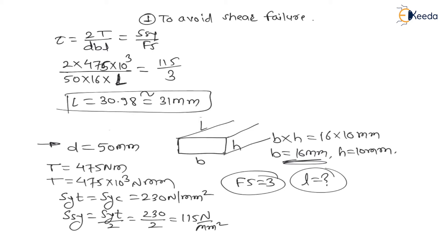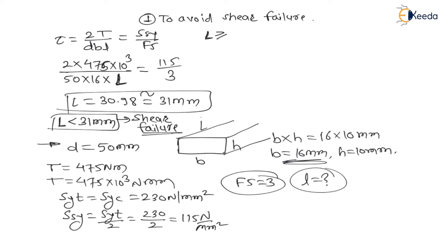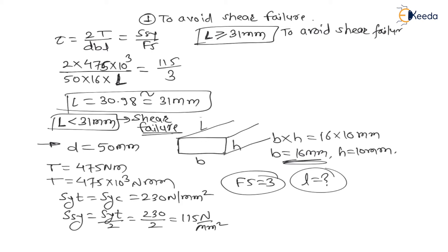This means whenever the length of key is less than 31 mm, there will be shear failure of the key. Therefore, to avoid shear failure, the length of key must be greater than or equal to 31 mm.